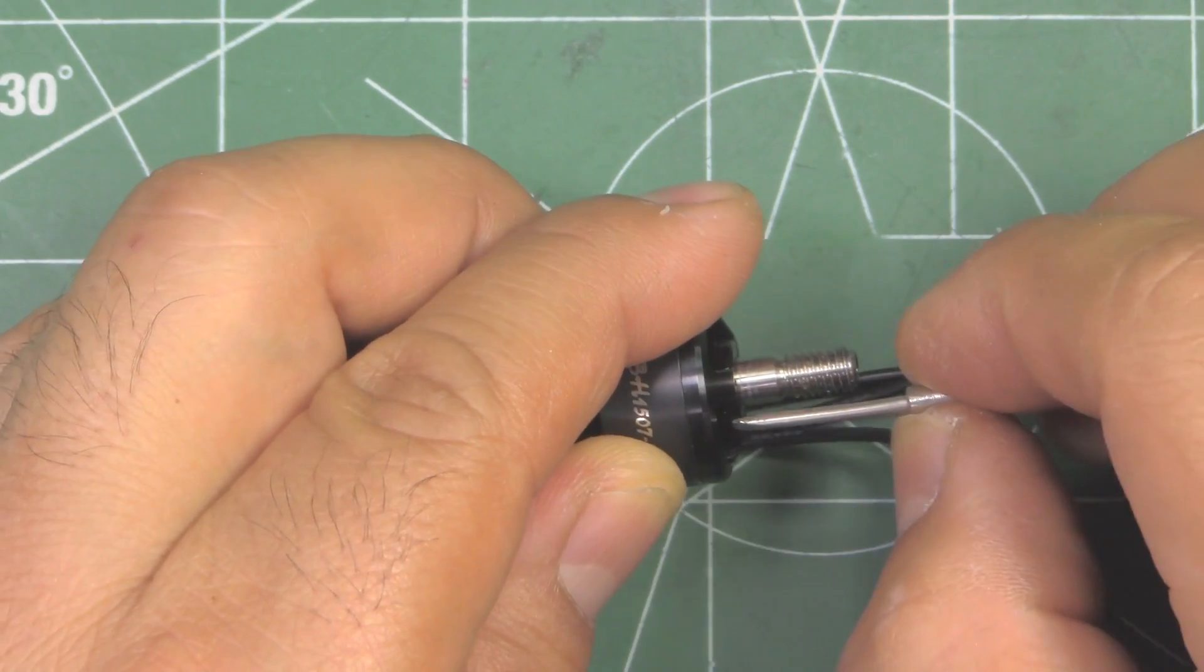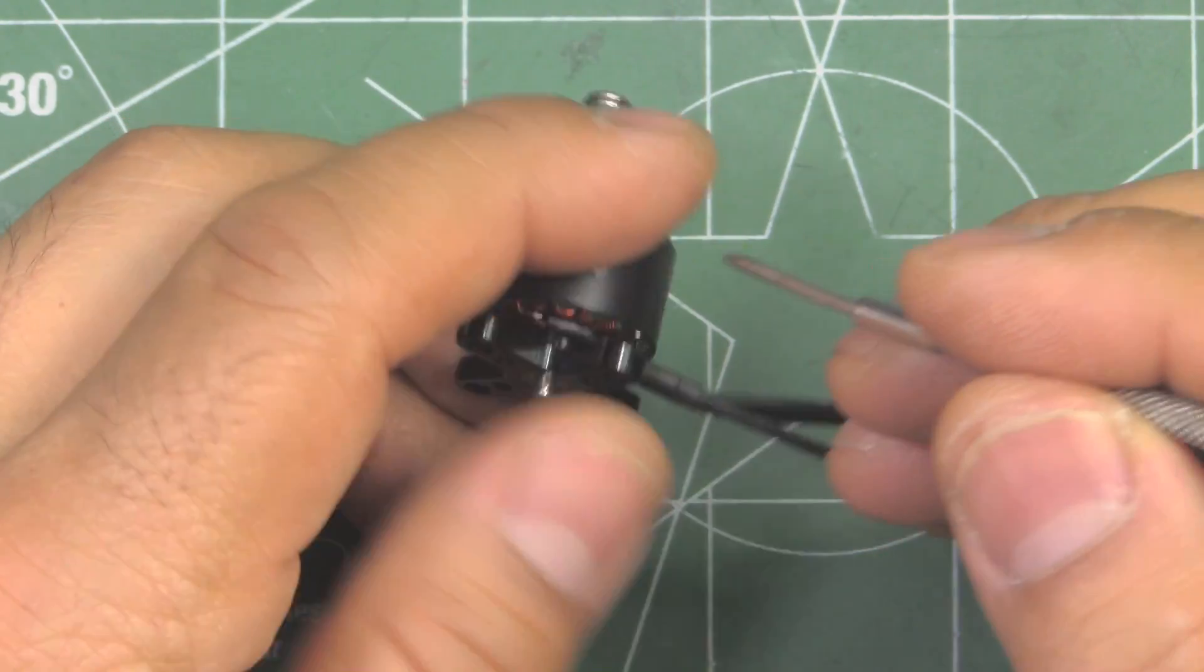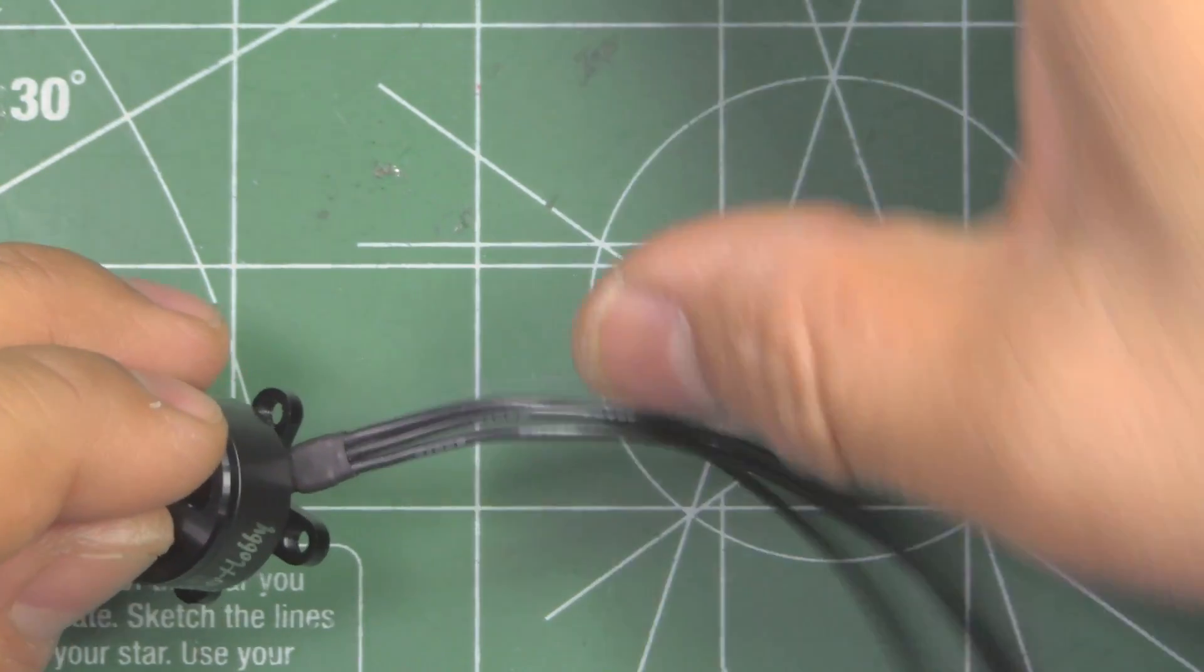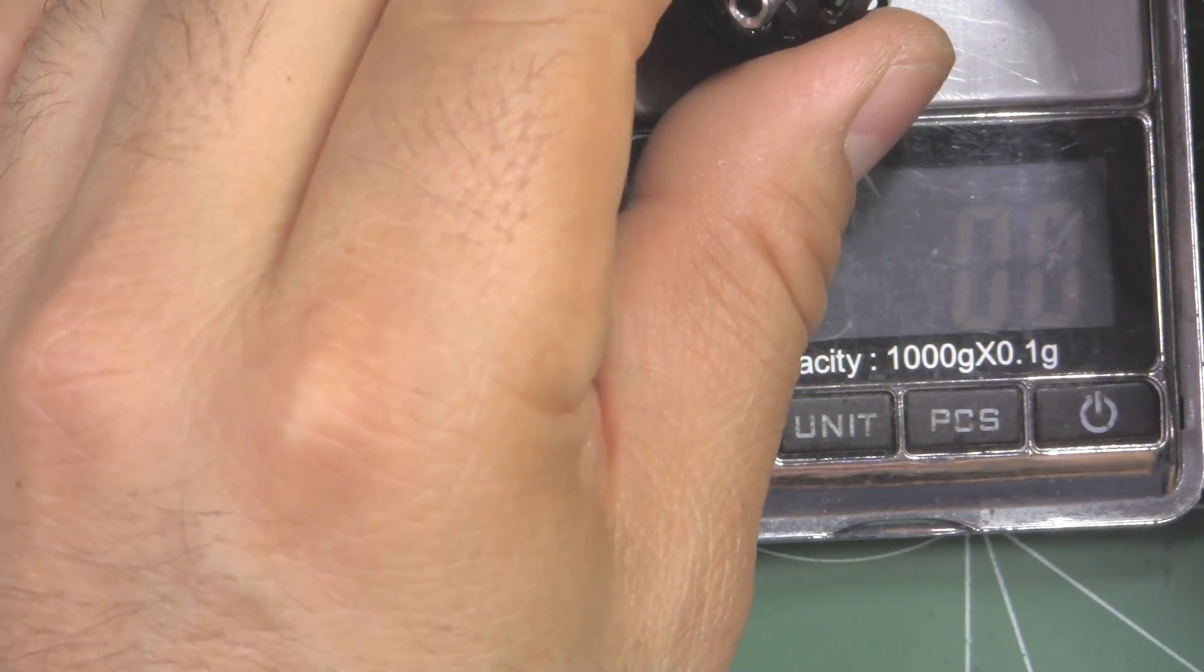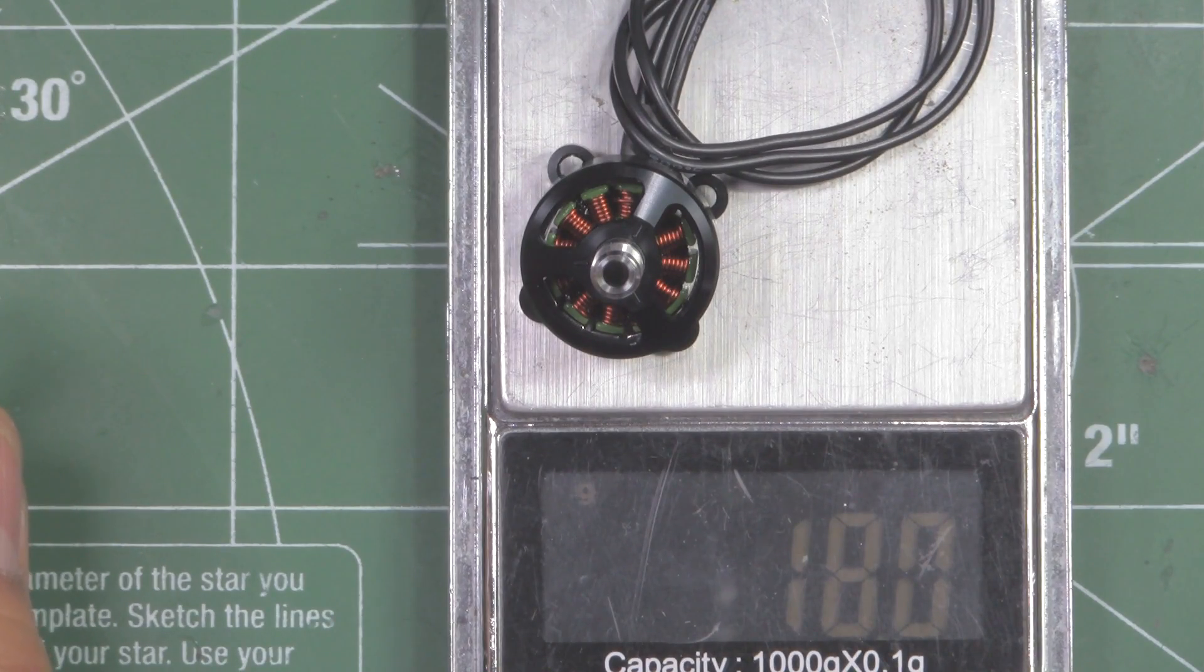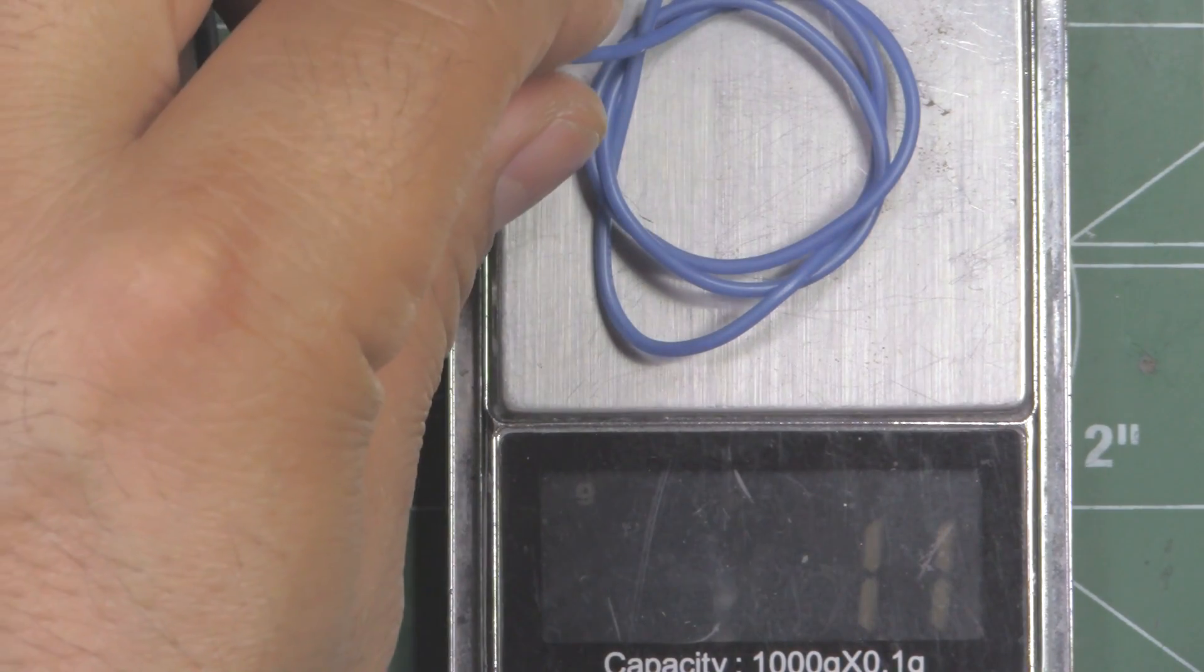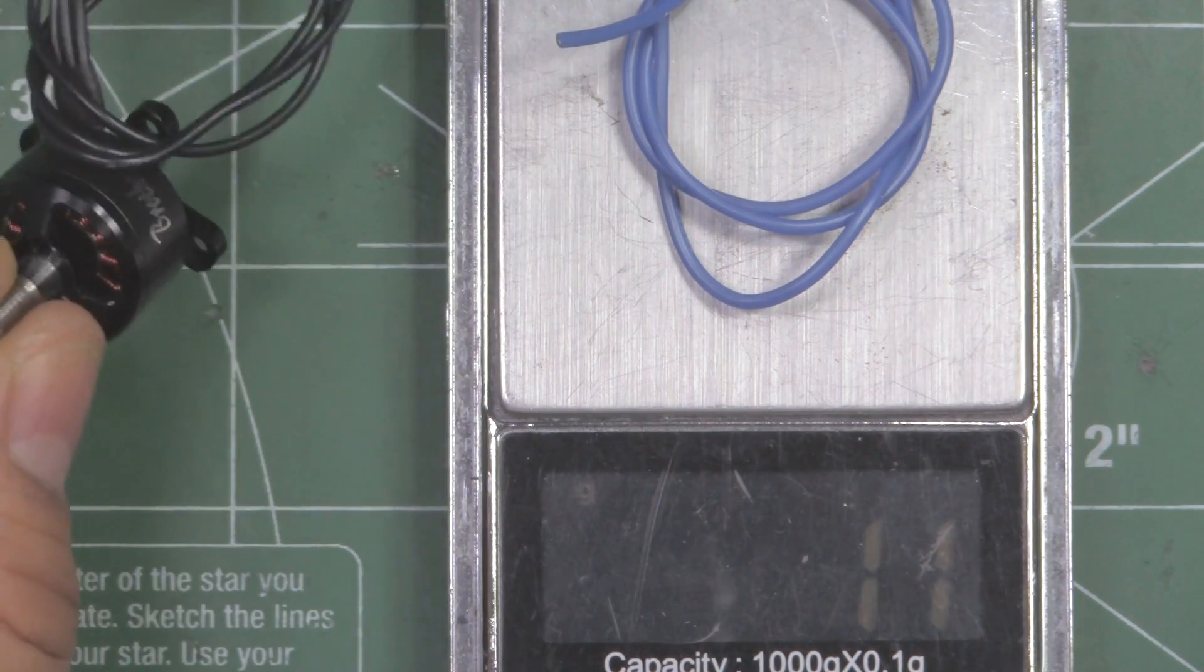So it's hollow only up to where it meets the bell right there, it's hollow there. The motor comes with 155 millimeters of motor wire, and this is 26 gauge. So let's weigh it with that much wire. So 18 grams with 155 millimeters, and if we remove the excess wire and leave it at 50 millimeters, then we end up with 1.1. So the motor is about 16.9 grams.